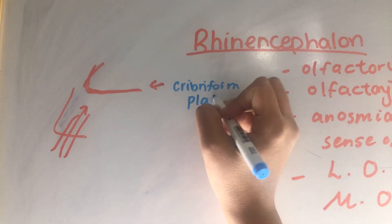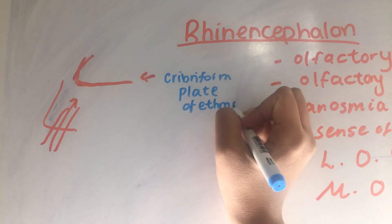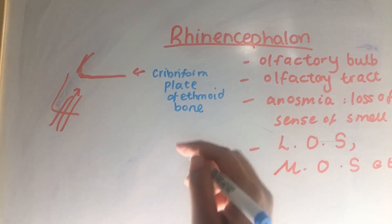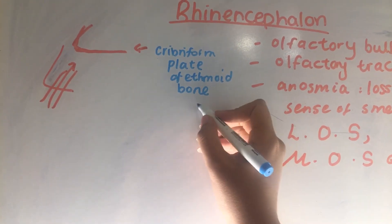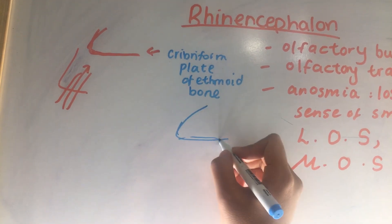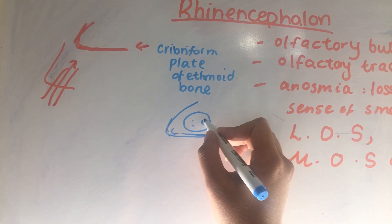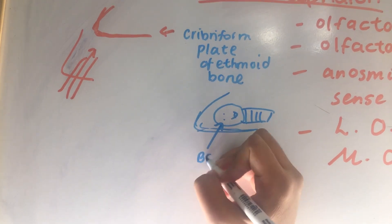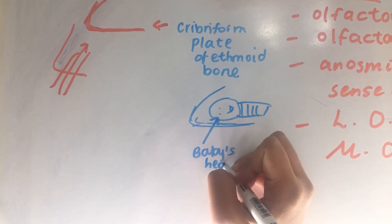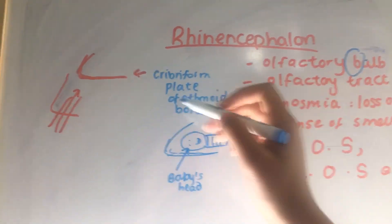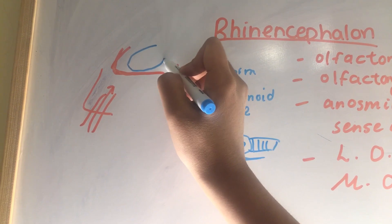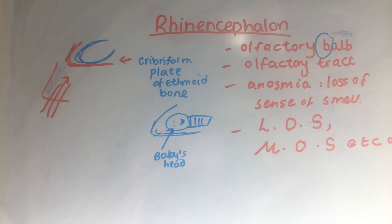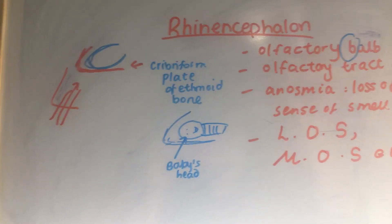To remember the cribriform plate, I always think of a baby's crib. So if this is a crib, the baby's head would lie in it — and just like the baby's head, we have a bulb, and that's the olfactory bulb. The olfactory bulb actually lies in the cribriform plate.